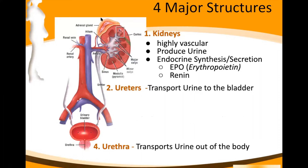There are four main structures of the urinary system. You may recognize these from ninth grade when we covered the reproductive system — these structures appear in those diagrams as well. First, the kidneys: this bean-shaped, highly vascular organ — 25% of cardiac output goes straight to the kidneys because of the many capillaries within. The kidney's job is to produce urine.